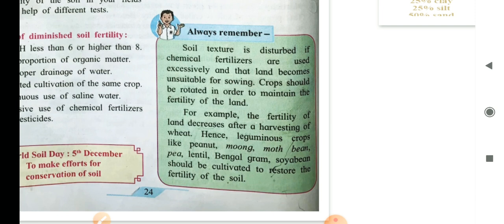For example, the fertility of the land decreases after a harvesting of wheat. Hence, leguminous crops like the peanut, moong, moth, bean, pea, lentil, bengal gram, soya bean should be cultivated to restore the fertility of the soil. Leguminous plants means these plants have root nodules in which nitrogen fixing bacteria are present which make the soil fertile.